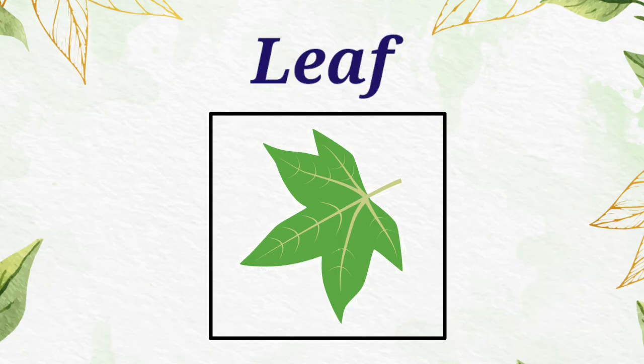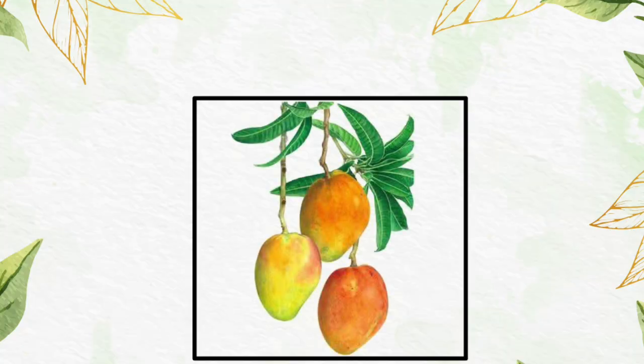Leaves help to prepare food for the plants by using sunlight, air and water, right? Next, tell me which part is this? That's right, it's a fruit.